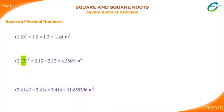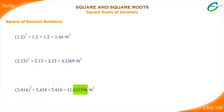Similarly, for 2.13, the number of digits after the decimal point is 2. After squaring, there are 4 digits after the decimal point. For 3.414, the number of digits before squaring is 3. After squaring, the number of digits is 6.